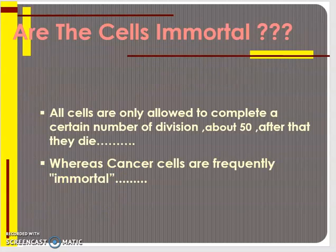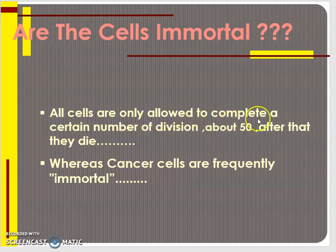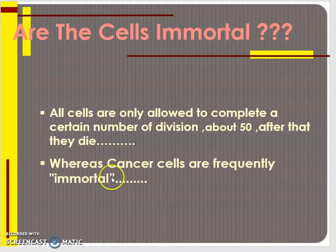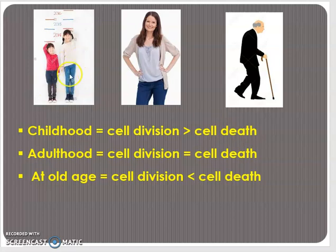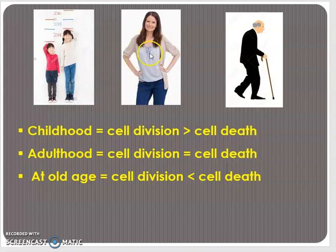One question comes to mind — are these cells immortal? Do they continue to divide? No. All cells are only allowed to complete a certain number of divisions, say about 50, and after that they die. In contrast, cancer cells are immortal — they continue to divide. In childhood, the number of cells in division are more than the number of cells that die, which is why children grow very fast. In adulthood, the number of cells in division equals the number that die, so there is a stagnancy of growth.